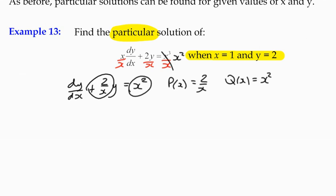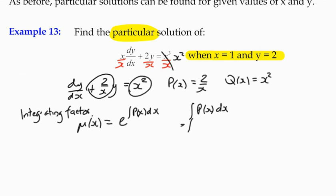So the first thing I can do is find the integrating factor μ. μ(x) is equal to e to the power of the integral of p(x)dx. The integral of p(x) with respect to x is the integral of 2/x dx.